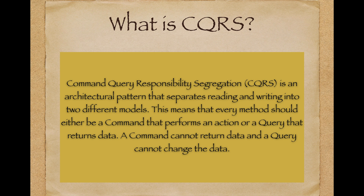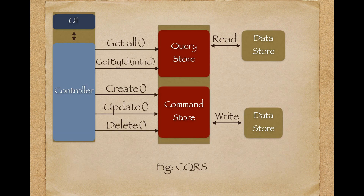CQRS separates reading and writing of our applications into two different models. Every model should either be a command that performs an action or a query that returns data. A command cannot return data, and a query cannot change the state of the data — it can only read data, whereas a command changes the state.